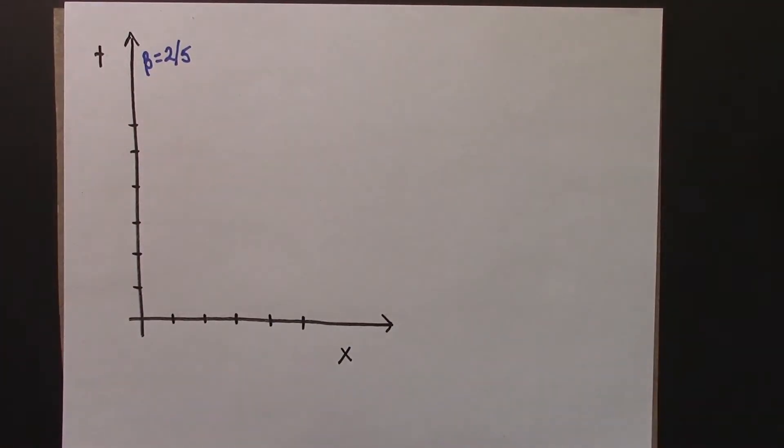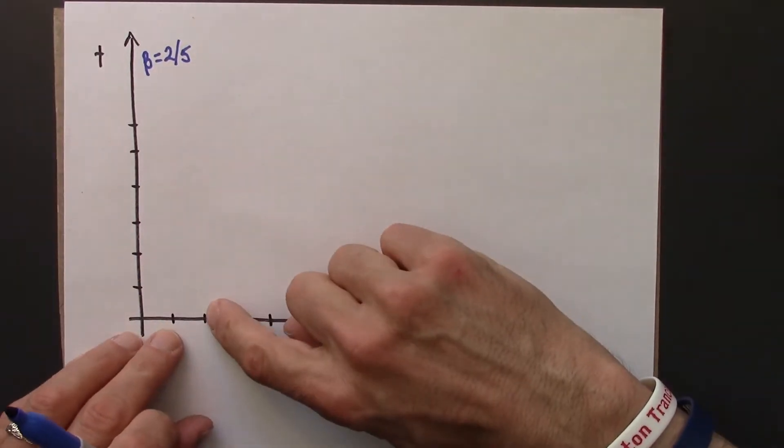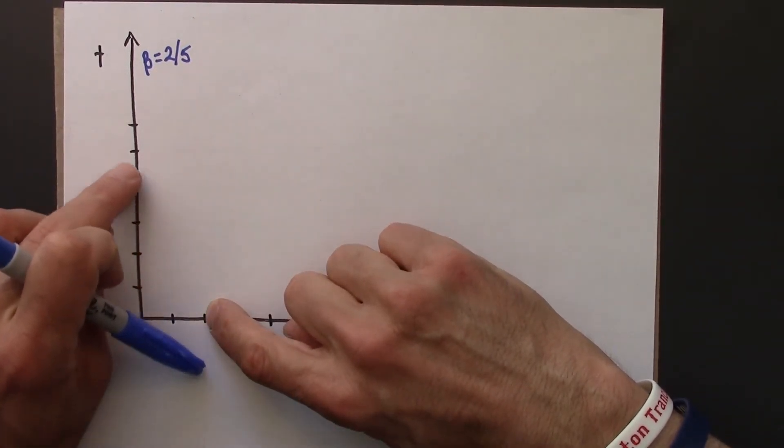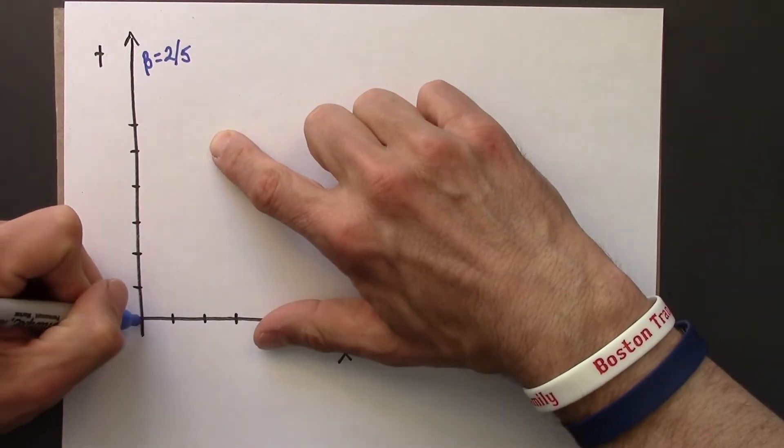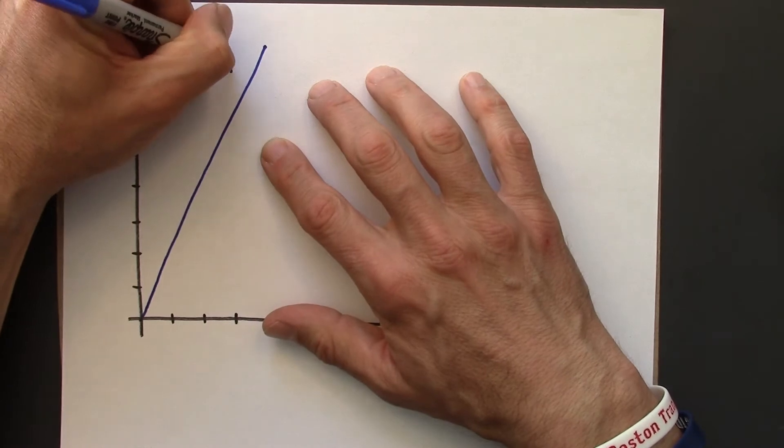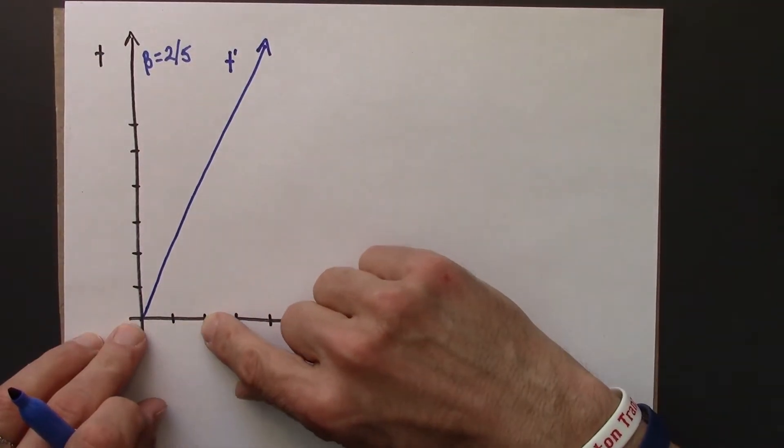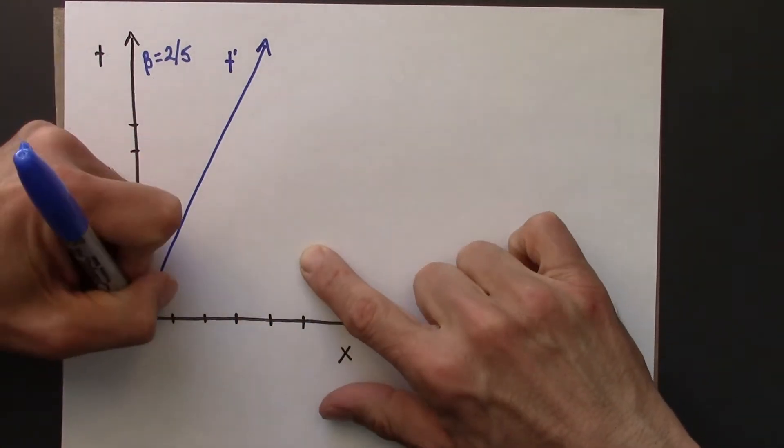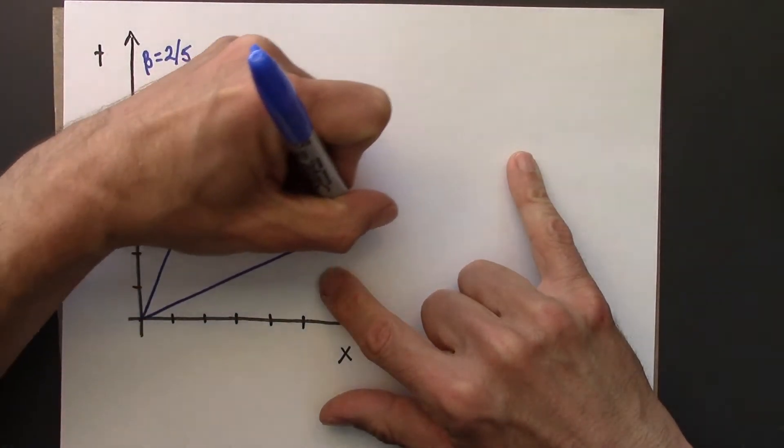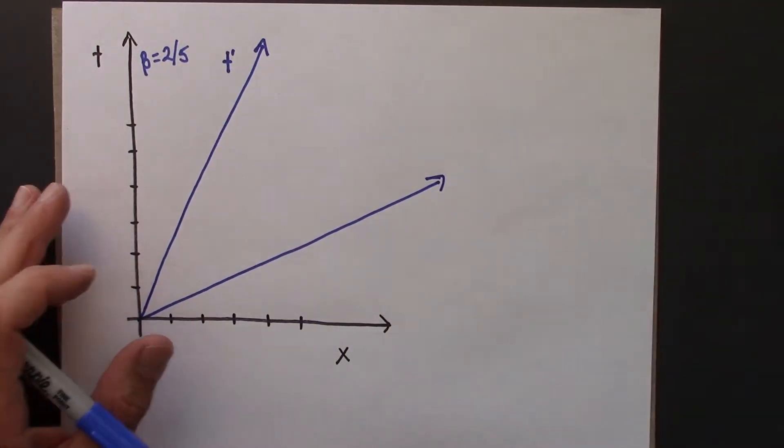So as before, we'll have beta is 2 fifths. As I go over 2, up 2, 4, 5 is going to be roughly this. So this is going to be my T prime axis. And then here I go over 5, 2, 3, 4, 5, up 2, that's going to be about that. Alright.